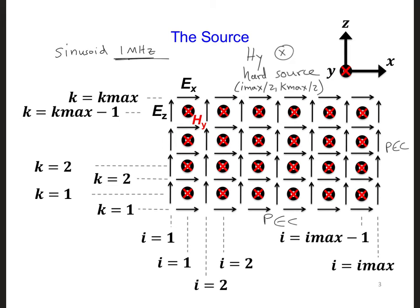Go ahead and implement the hard source in your model. Now remember, we need at least 10 to 20 grid cells per wavelength for sufficient accuracy. We determined this in one dimension, but it's also true for two and three-dimensional codes. So now that you're changing the source to a sinusoid at 1 MHz, you should also check what delta should be equal to. Let's model 20 cells per wavelength.